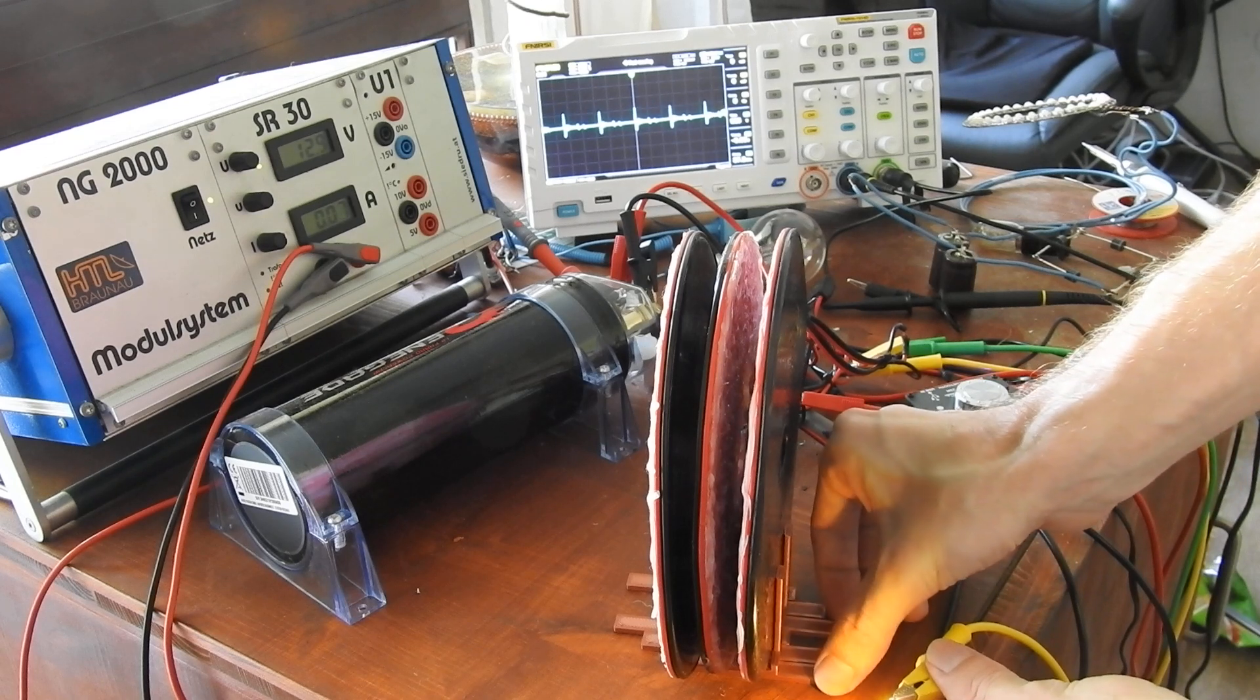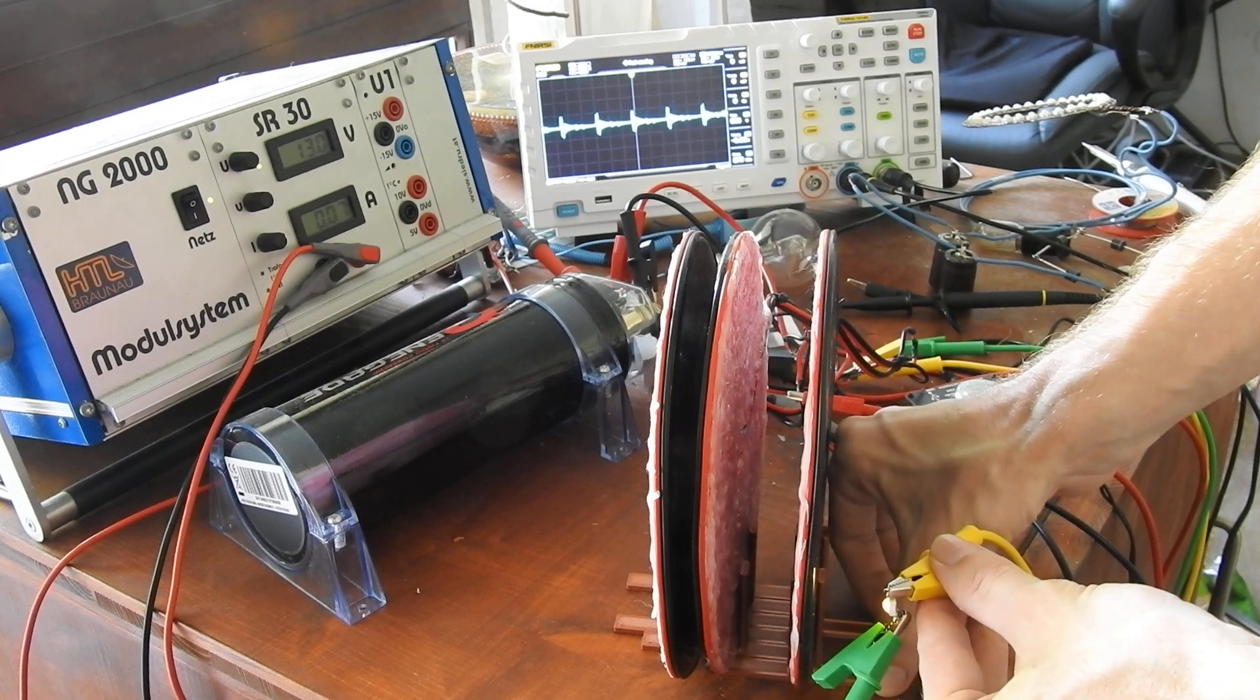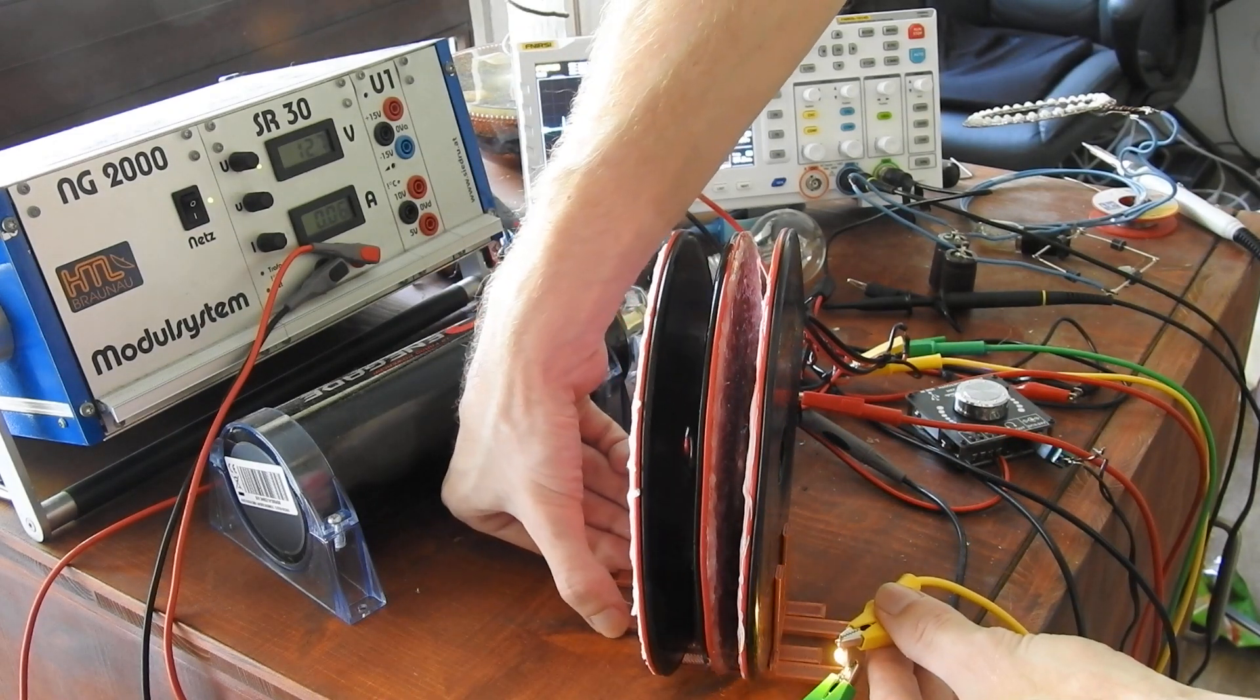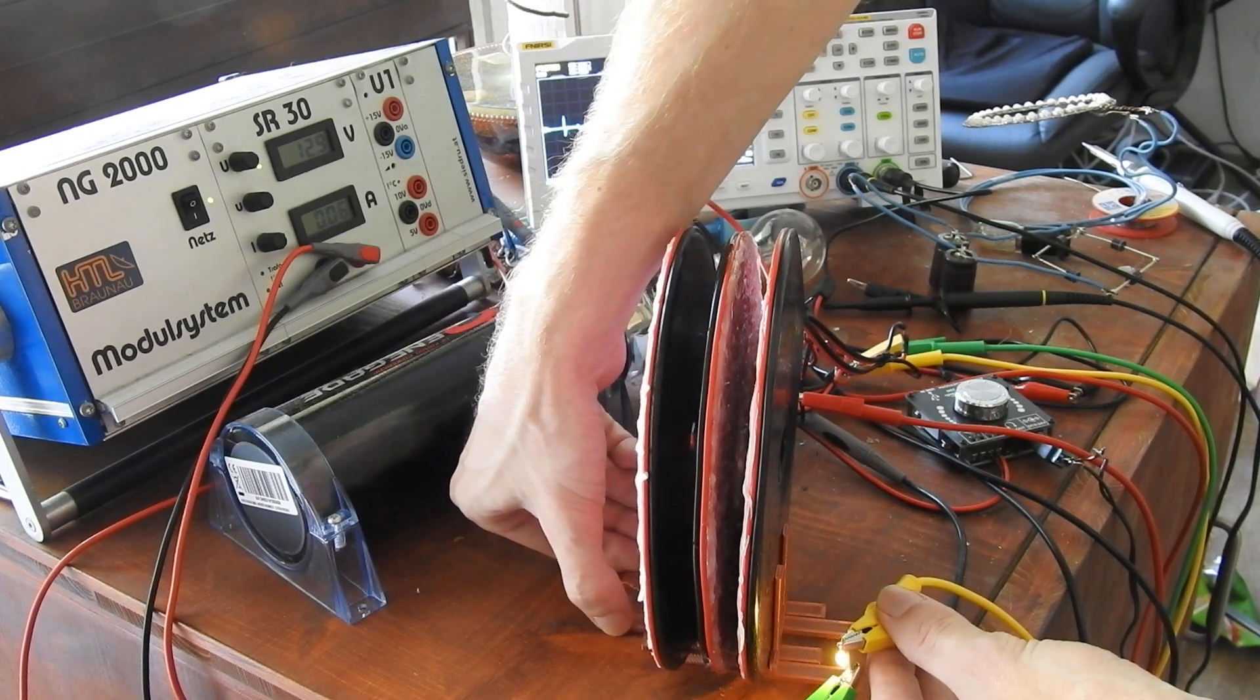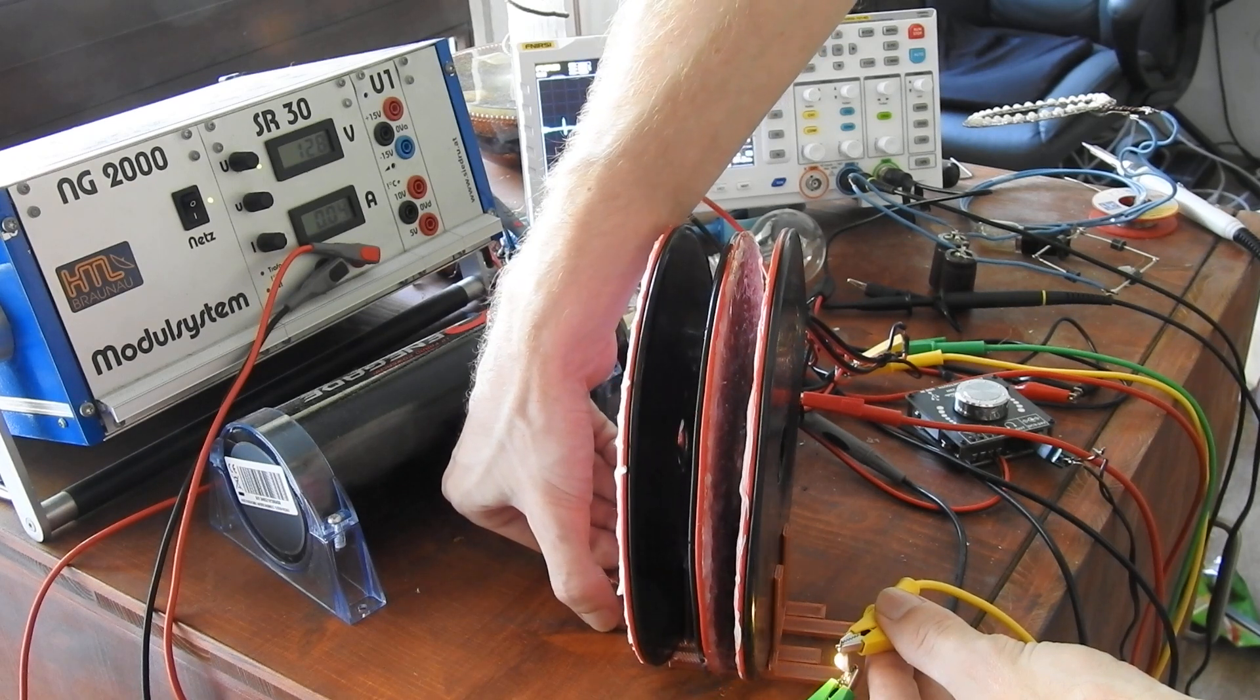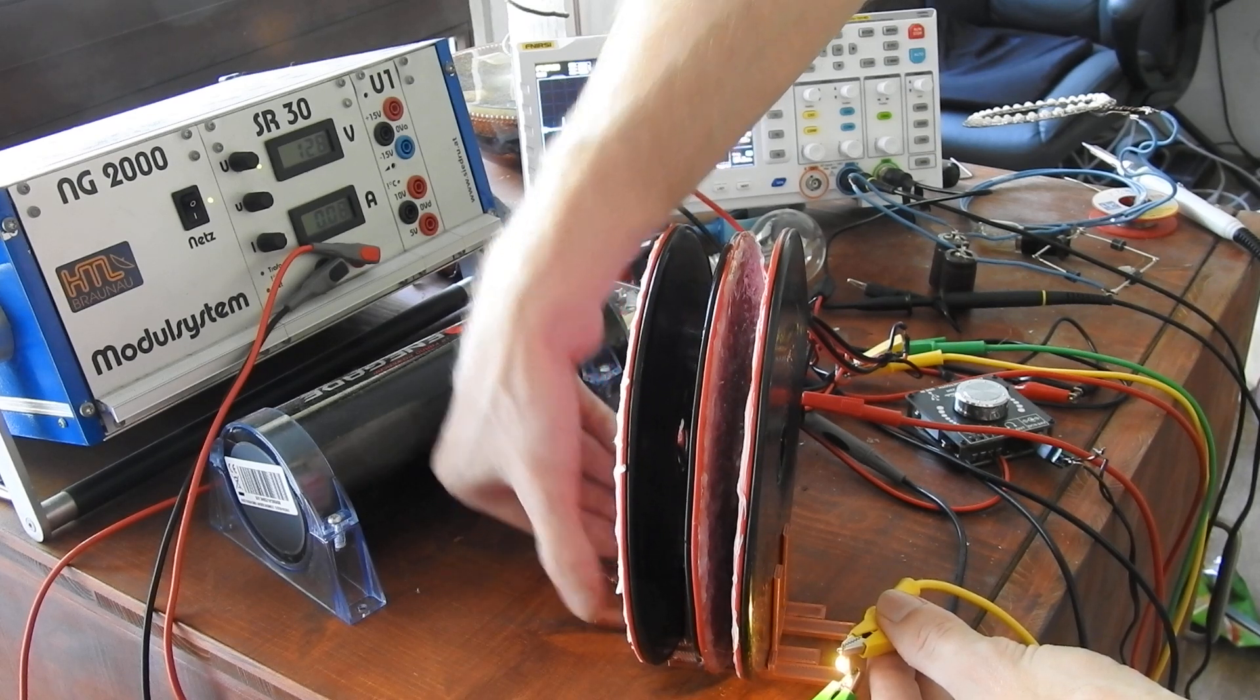And depending on how far I move away the coils, also the strength goes down. Same on the other side. And so you can determine the strength of the field depending on how far the coils are apart from each other.